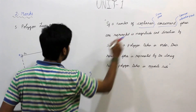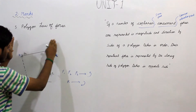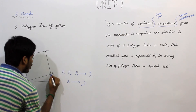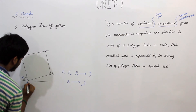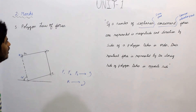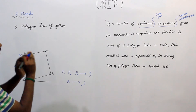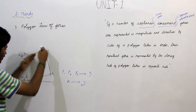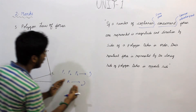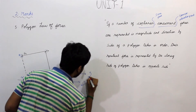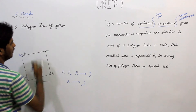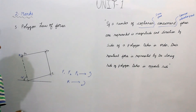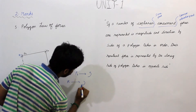If a number of coplanar forces are lying in the same plane, concurrent forces are those having a common intersection point. They are represented in magnitude and direction by the sides of a polygon. The resultant force on F1, F2, and F3 are taken in order of anticlockwise direction, and the resultant force is taken in the opposite side, as we are reading in clockwise direction.